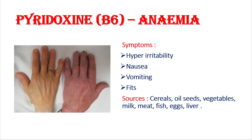Vitamin B6 is pyridoxine. The deficiency disease is anemia. Symptoms are hyperirritability, nausea, vomiting, and fits. The person with anemia has very low blood levels — hemoglobin percentage is very less. To improve blood quality, we have to eat cereals, oil seeds, vegetables, milk, meat, fish, eggs, and liver of different animals like goat and sheep — those are the sources of vitamin B6.